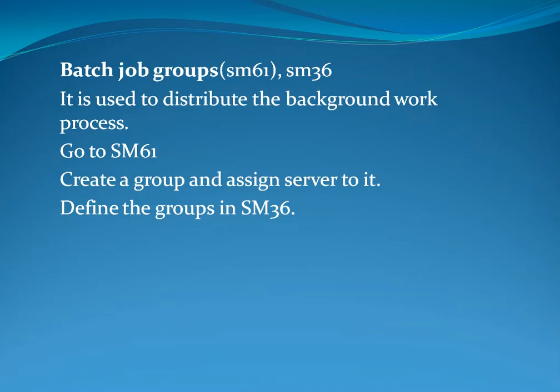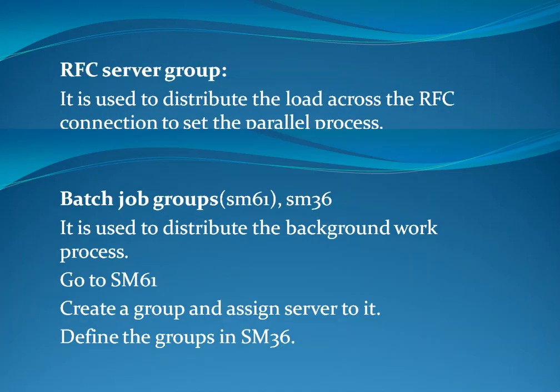Batch job groups are used to distribute the background work process. Go to SM61, create a group and assign servers to it. Define the groups in SM36. RFC server group uses T-code RZ12, and is used to distribute the load across RFC connections and to set parallel processes. Go to RZ12, create a group and assign the servers.